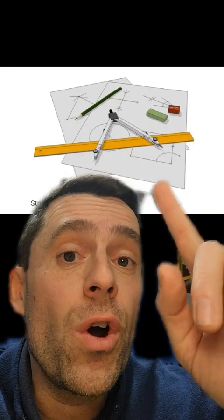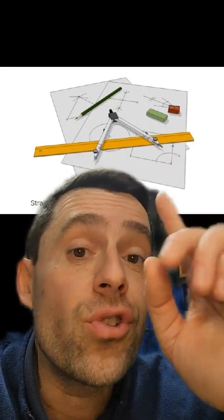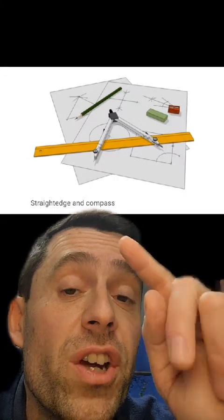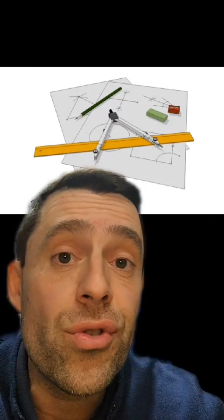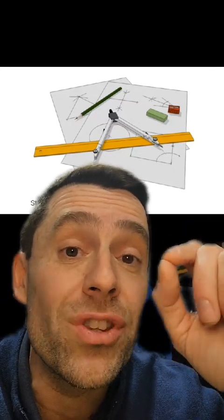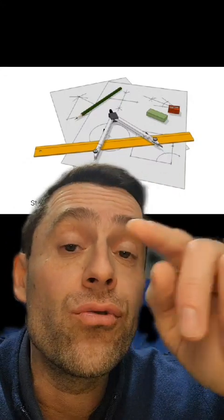The coolest polygons, for sure, are those that are constructible. Constructible here means that they can be constructed with a straight edge and compass. So a straight edge is a ruler with no markings, so I can draw straight lines, but I can't measure distances. And a compass, so I can draw circles at various points.